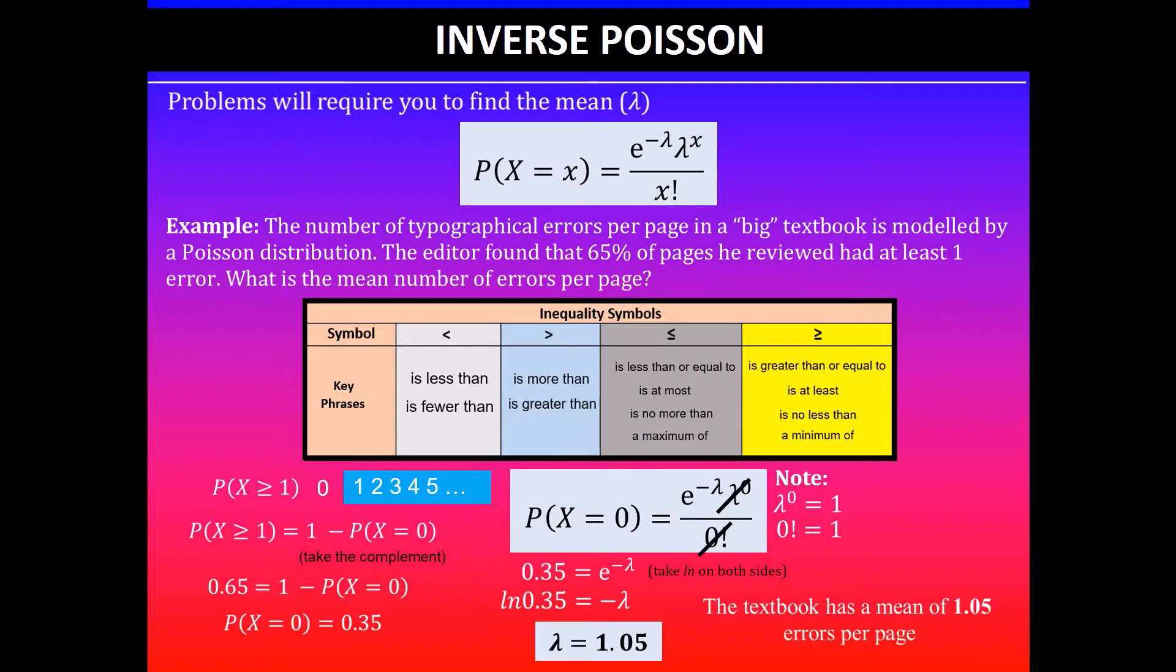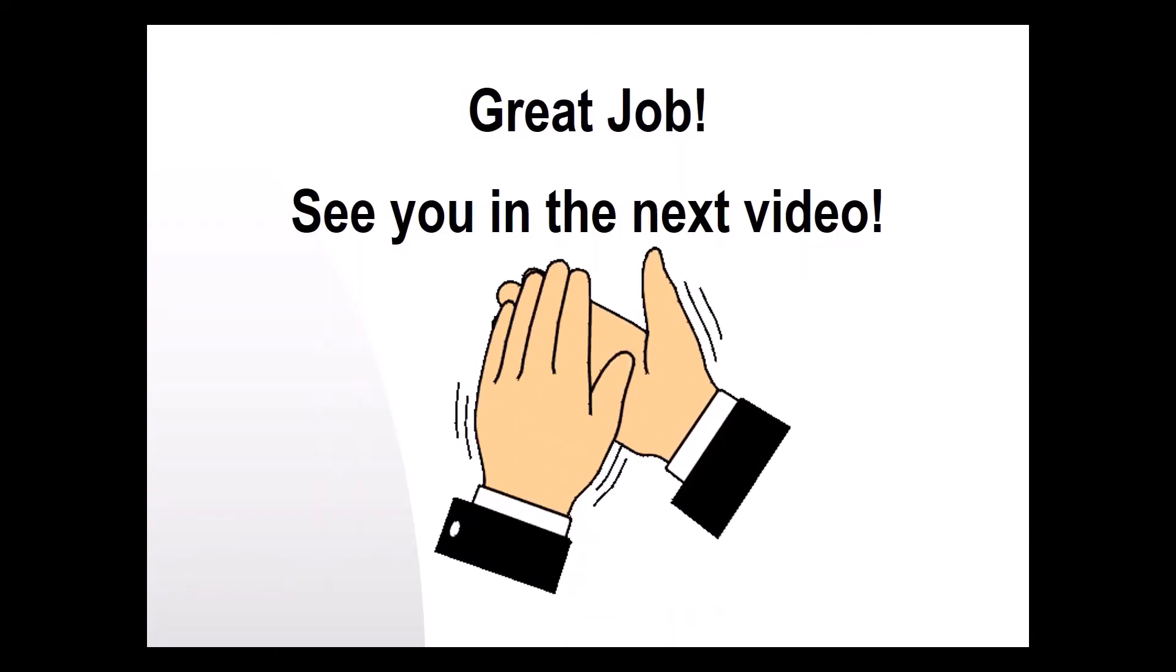We'll write the answer in context: the textbook has a mean of 1.05 errors per page. Thanks for watching, I'll see you guys in the next video.